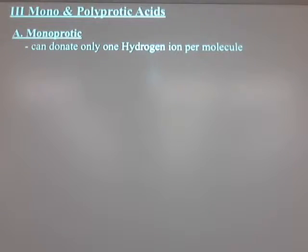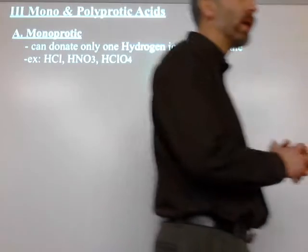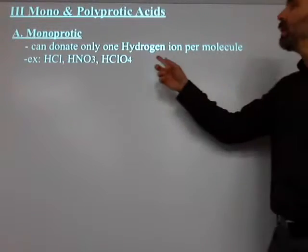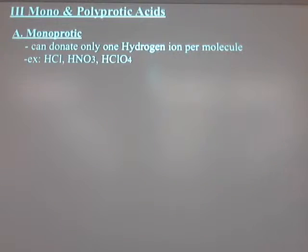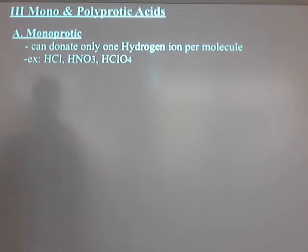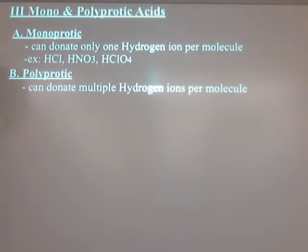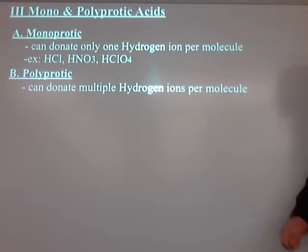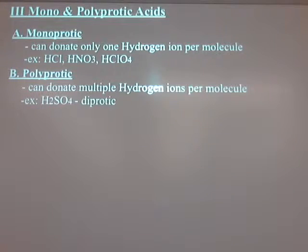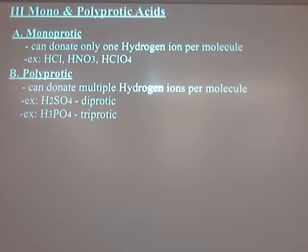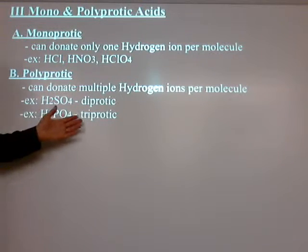That is what makes something an acid. Guys like HCl, HNO3, HClO4 — I chose those three for a reason. I don't care how many O's there are; I only care how many H's per molecule. That's all that matters for mono, diprotic, or whatever. Polyprotic acids can donate multiple hydrogen ions per molecule. Sulfuric acid, which can donate two, I'd call diprotic. Phosphoric acid, which can donate three, I'd call triprotic.